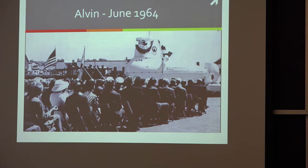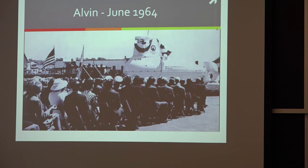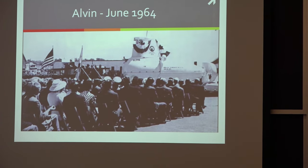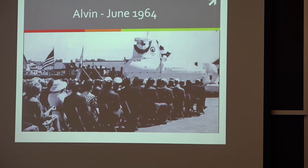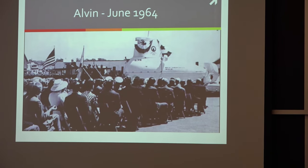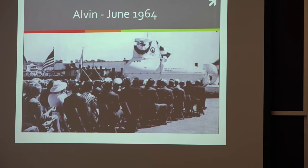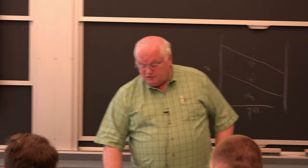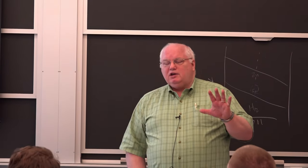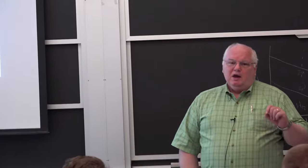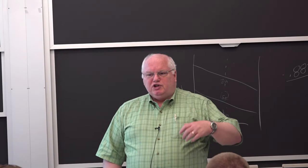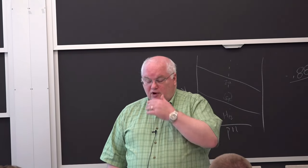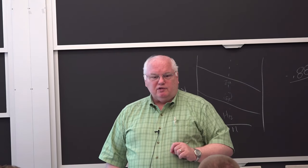The Mansfield amendment in '72 meant the Navy had to give up a lot of stuff. The Alvin had found, for example, the atom bomb the Air Force had dropped off Spain. The Alvin got transferred to the National Science Foundation. The vessel was until recently still owned by the Office of Naval Research, which was founded in 1946. When the National Science Foundation was founded in 1948 or '49, it was modeled after what the US Navy had already started three years before.